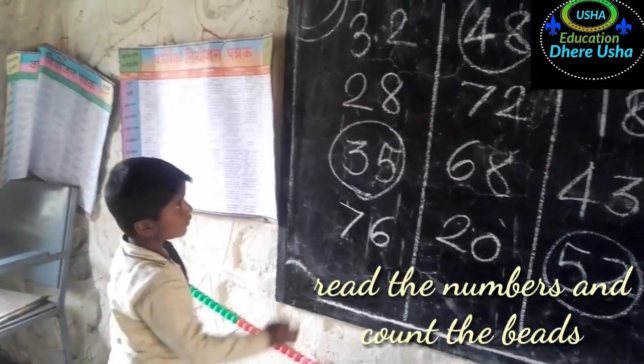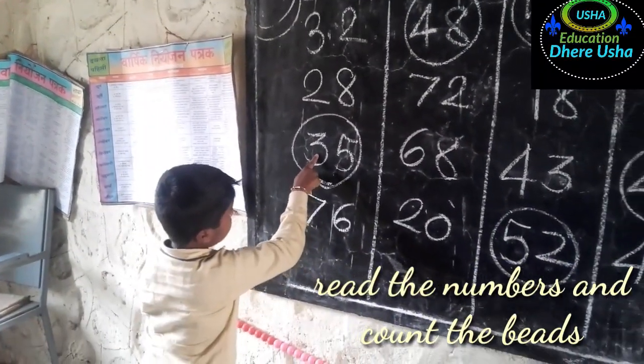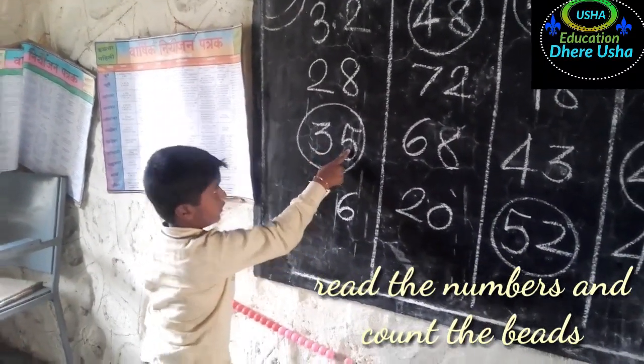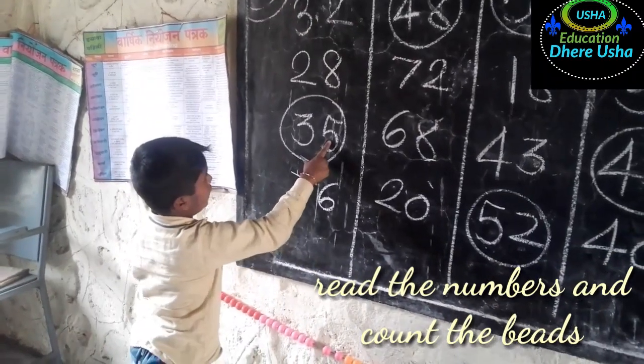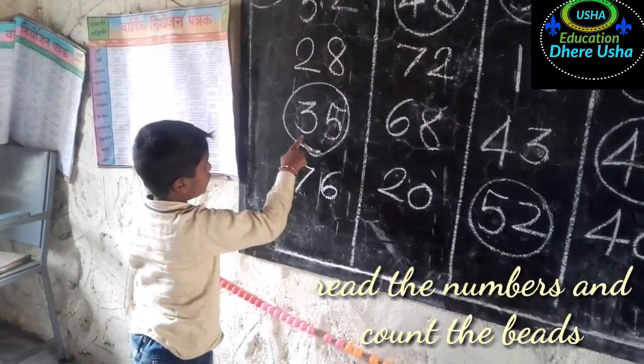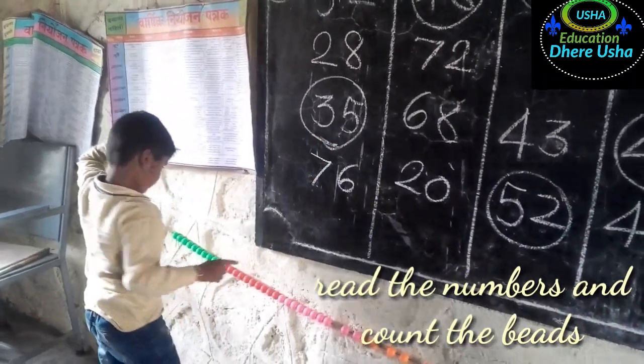Read that number. Thirty-five. How many units? Five. How many tens? Three. Very good.